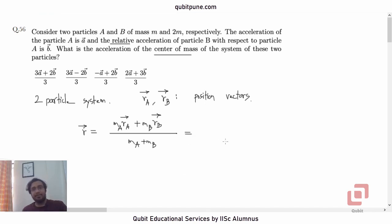What is m_a? It's m. So m r_a bar plus 2m because mass of b is 2m, r_b bar divided by m plus 2m. Let me write it as 3m. Mass will get cancelled now. We will get r_a bar plus 2 r_b bar upon 3.